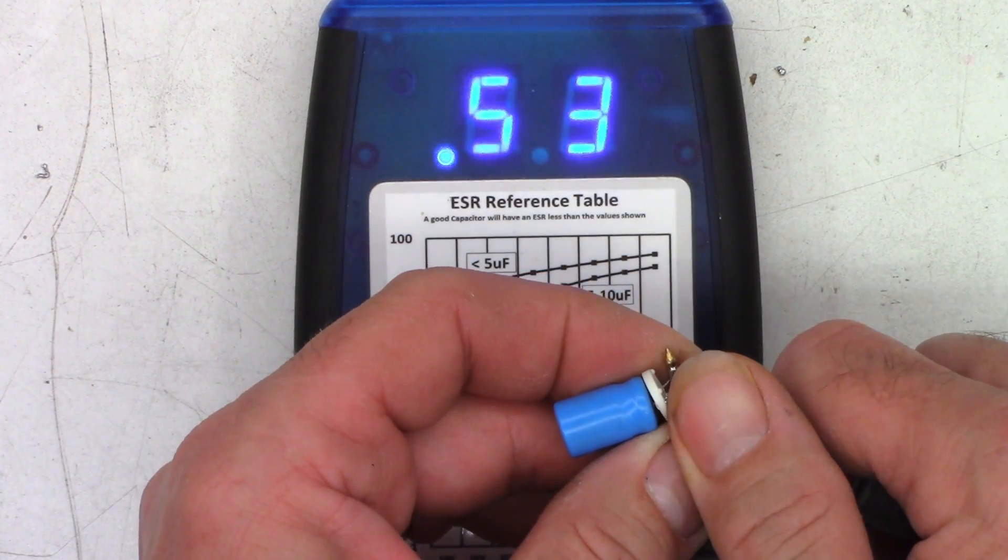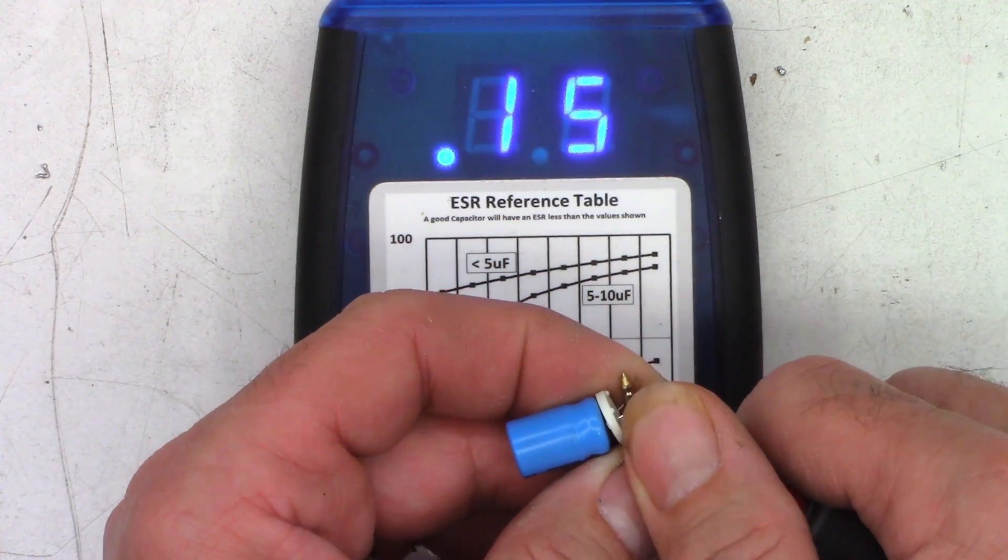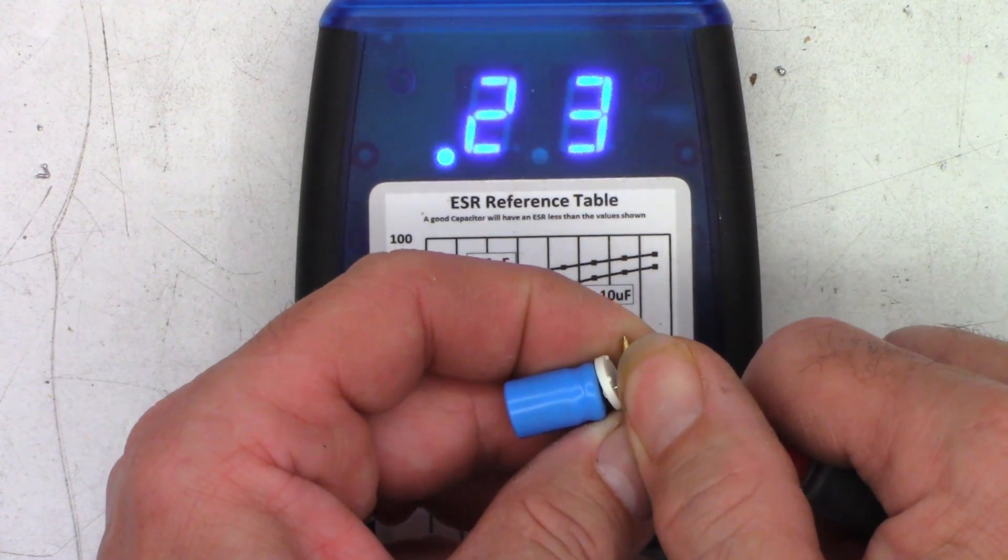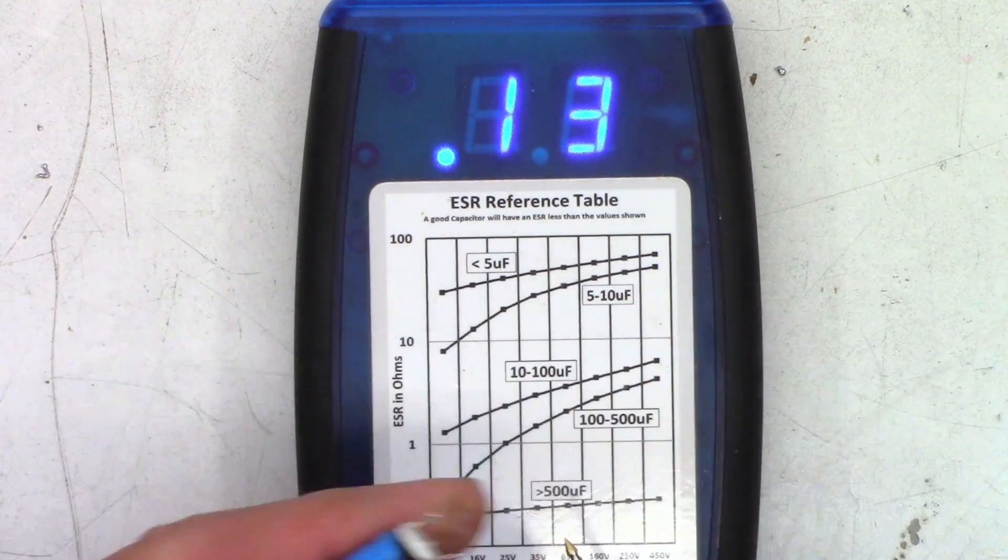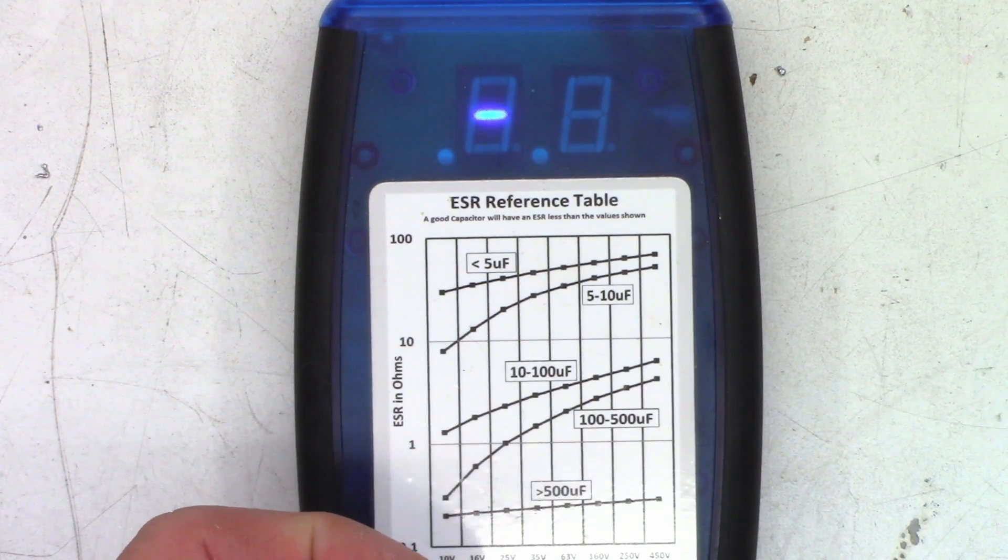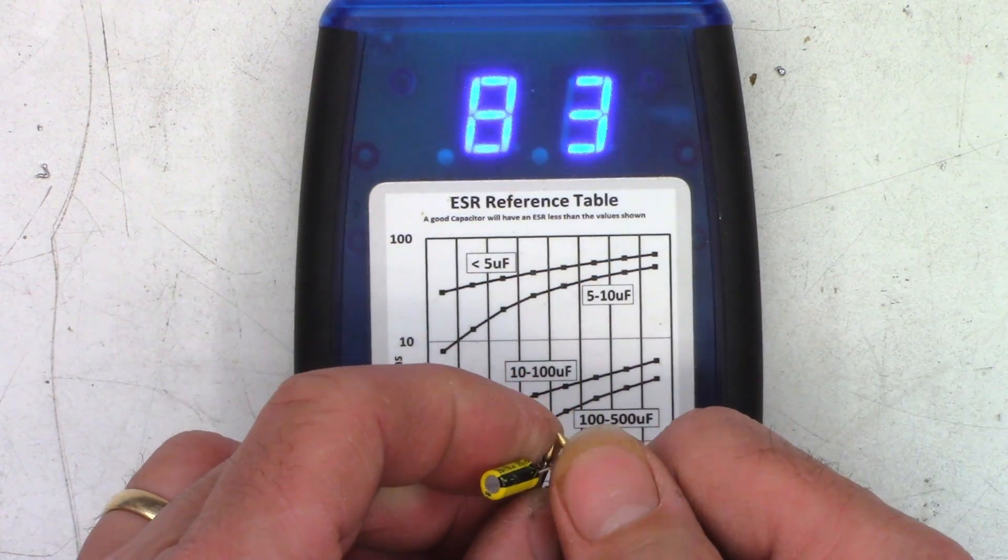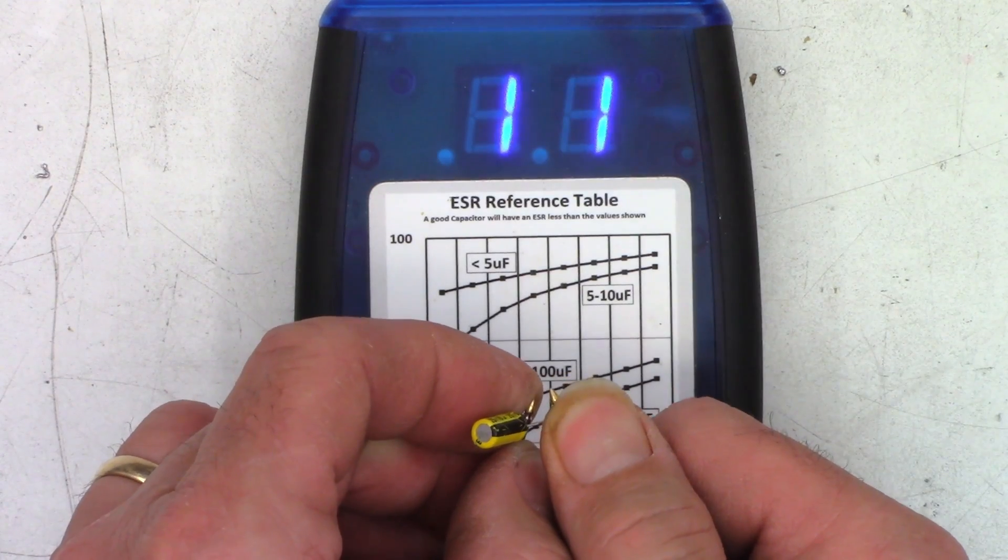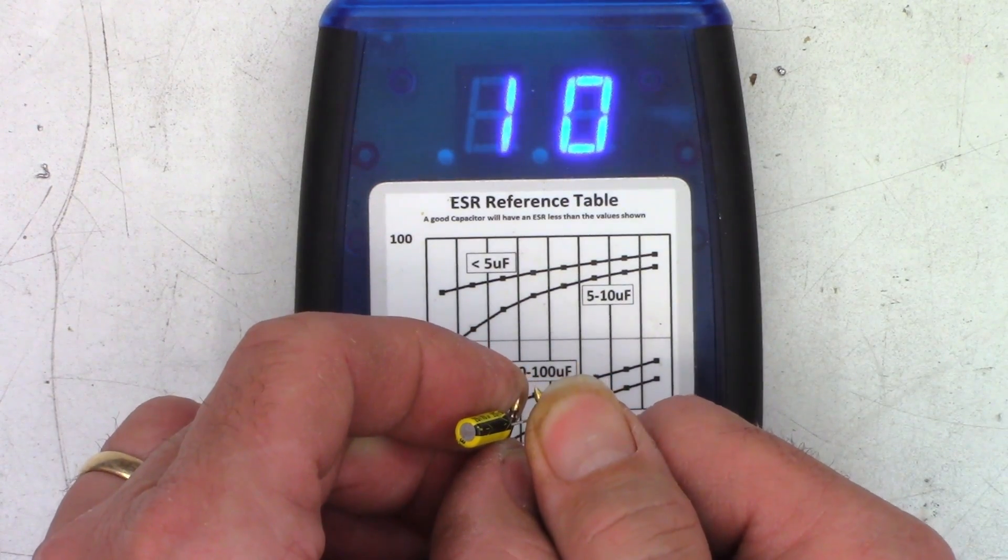And that one reads 0.1 ohms. The other 220, 0.12. So the new ones are definitely better. And now for these little guys, they'll probably warm up as I touch them. Try not to touch them too much. 11 ohms on the first one, 10 ohms.